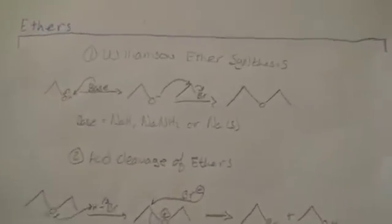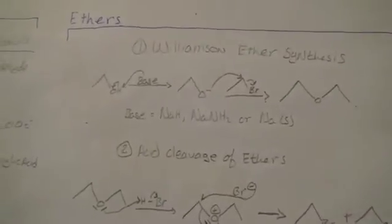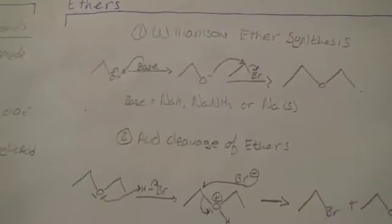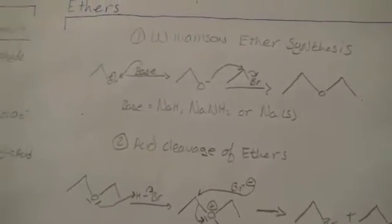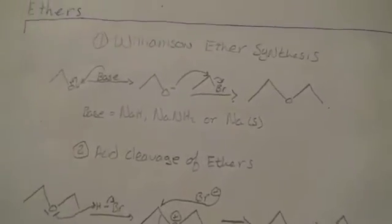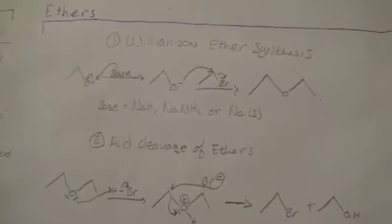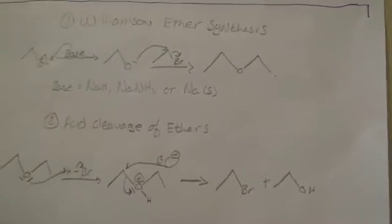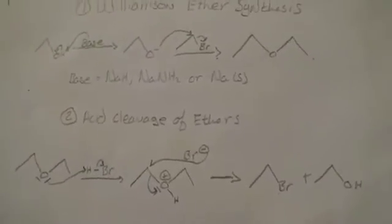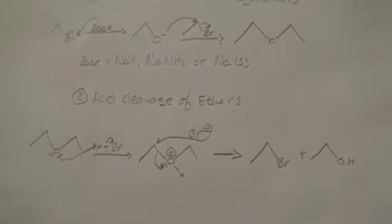Ethers. This is the Williamson ether synthesis. You start with an alcohol, you pull off the hydrogen to make an alkoxide. With a base, you use a base for that, and then you react it with an alkyl bromide. It attacks the carbon next to the bromine, which has a partial positive charge on it, and you get this thing that looks a little like a stick figure bird. A good base to use in that is NaH or NaNH2. Sodium metal also works.